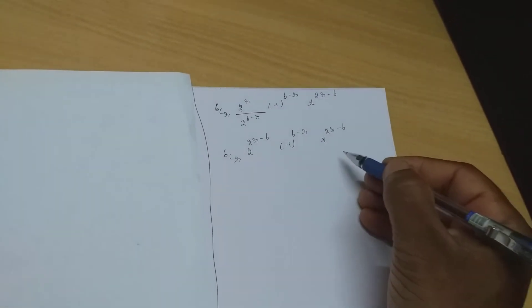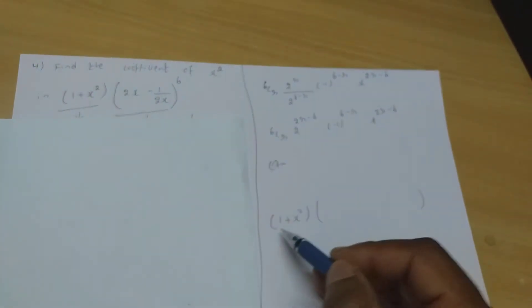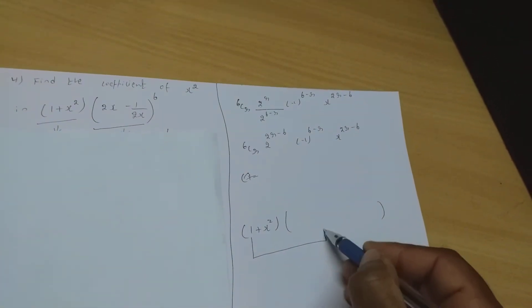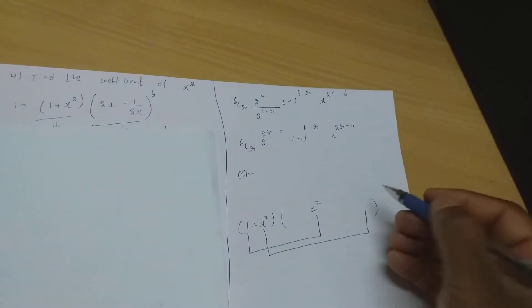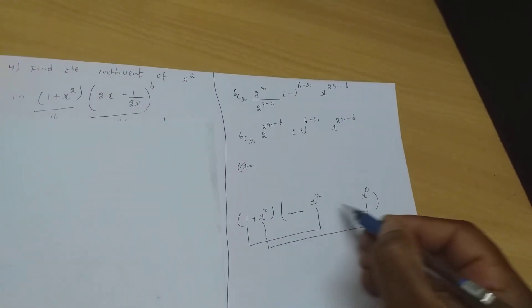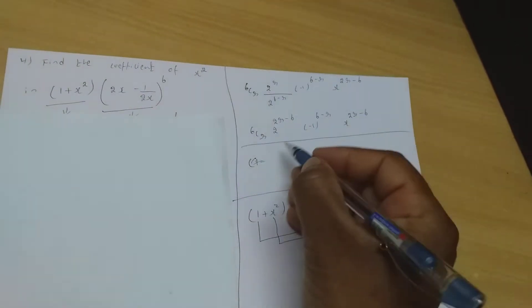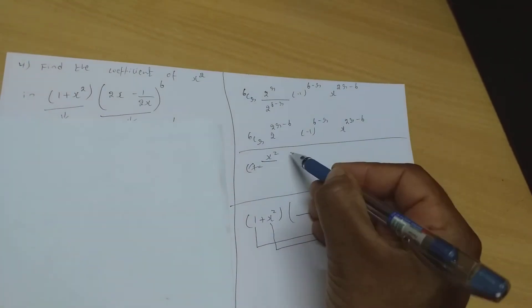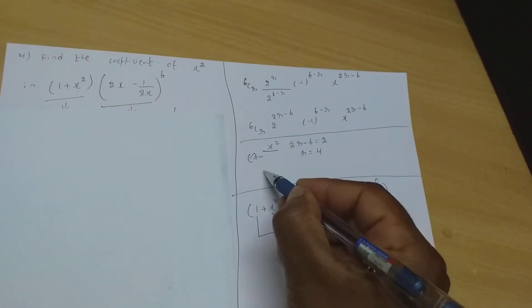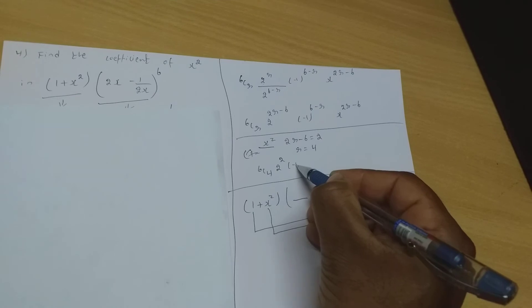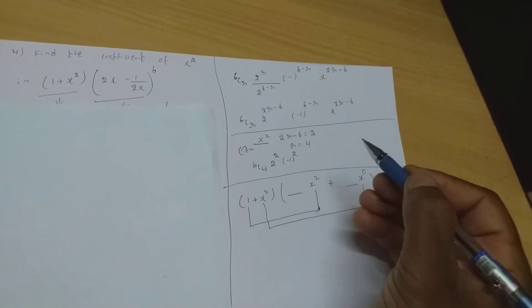I need the coefficient of x² from this general term. Since it's (1 + x²) × expansion, 1 multiplies x² and x² multiplies x⁰. For x²: set 2r − 6 = 2, giving r = 4. Substituting: 6C4 · 2^(2) · (−1)^2 = 15 × 4 × 1 = 60. So coefficient of x² is 60.